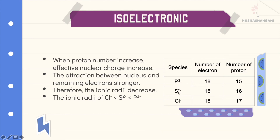For the isoelectronic anions P³⁻, S²⁻, and Cl⁻: when the proton number increases, the effective nuclear charge increases. Their electron numbers are the same, but the proton number increases, making the attraction between the nucleus and the remaining electrons stronger. Therefore, the ionic radius decreases. The ionic radius of Cl⁻ is smaller than S²⁻, which is smaller than P³⁻. Cl⁻ has the most protons, so it attracts electrons most strongly and has the smallest ionic radius.